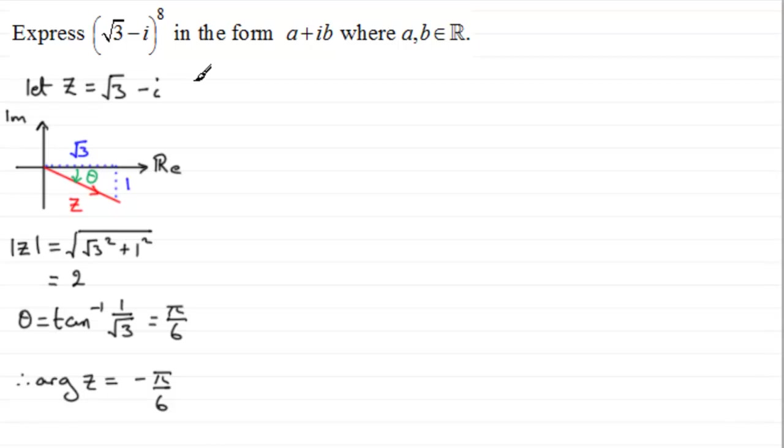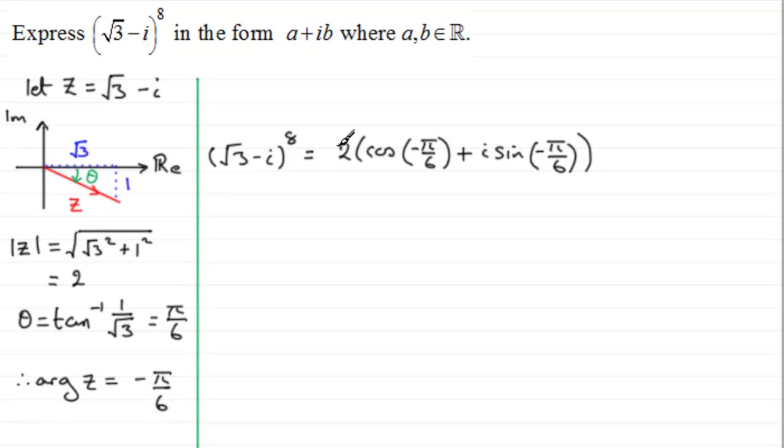Okay, so having done that, we can now express this in mod arg form. So what we have then is essentially that root 3 minus i to the power 8 can be expressed then in mod arg form to the power 8. So you've got root 3 minus i is going to be 2 for the modulus, and then that's going to be multiplied by the cosine of the arg, which is minus π upon 6, and then plus i sine of minus π upon 6. And then all of this, this remember is the mod arg form for root 3 minus i, but all of this now is raised to the power 8.